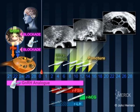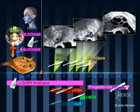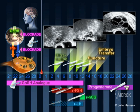Oocyte recovery is undertaken 36 hours later. Following the procedure, a daily supplement of the hormone progesterone is given vaginally. 2 to 5 days after oocyte recovery, the embryos are transferred.